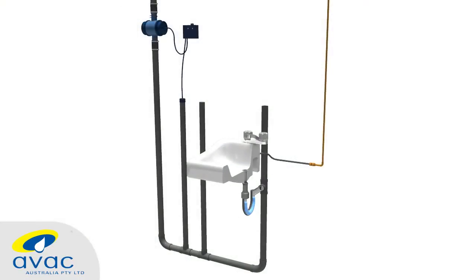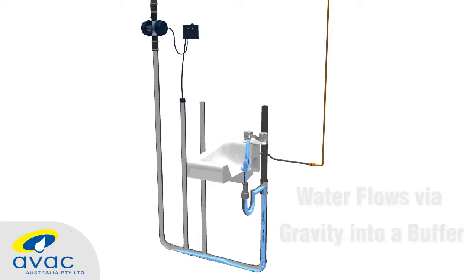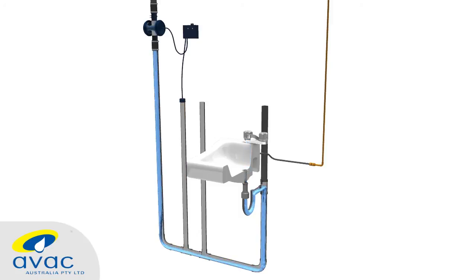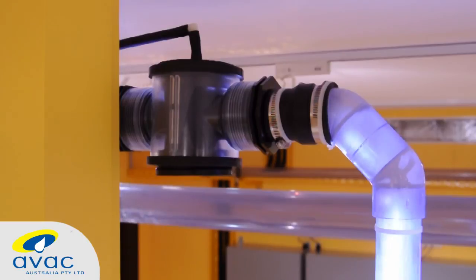For fixtures such as sinks and showers, wastewater from the fixtures flows via gravity into a buffer. When the buffer reaches a preset fill level, the interface valve is automatically opened, allowing atmospheric pressure to be drawn through the buffer carrying any collected waste into the piping network. The valve timing mechanism automatically closes the interface valve when the buffer has been emptied and the cycle is completed.